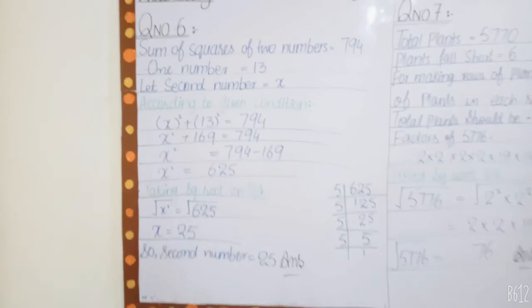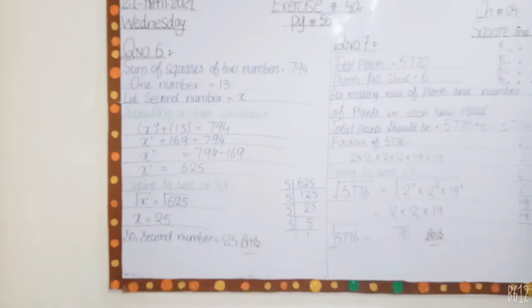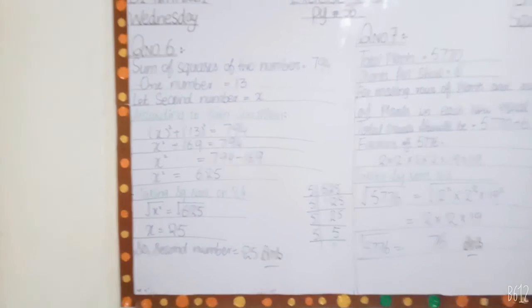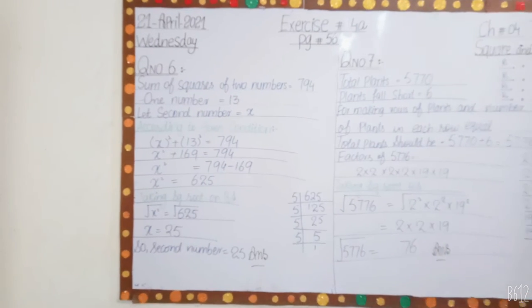x is equal to 25, so second number is equal to 25. Question number 6 is complete here. First number is 13 and second number is 25.